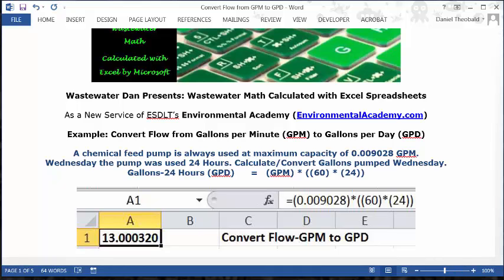You can go to a blank spreadsheet. In cell C1 you can type this description: convert flow GPM to GPD. In cell A1 you can format it as numbers with six decimals and set it as bold and centered.